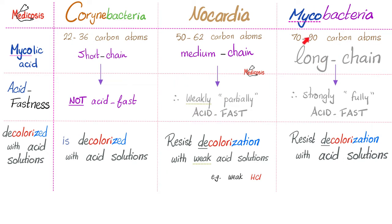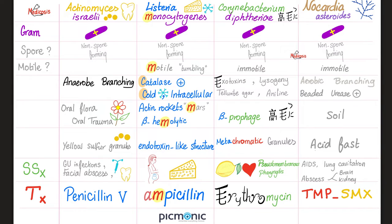Mycobacteria have very long-chain mycolic acid with many carbon atoms — strongly acid-fast. Whether you add a weak acid or a strong acid, you cannot decolorize mycobacteria. Nocardia was supposed to be gram-positive, non-spore-forming, immotile, aerobic, branching, beaded, and urease-positive — ubiquitous in the soil. It is acid-fast, although weakly or partially. Signs and symptoms include lung cavities, lung abscesses, brain abscesses, kidney abscesses, skin abscesses, and mycetoma. If you are immunocompromised, you are at higher risk, especially for severe or disseminated nocardiosis. Unfortunately, you cannot prevent nocardiasis because Nocardia is everywhere around you. Treatment is TMP-SMX — trimethoprim-sulfamethoxazole.